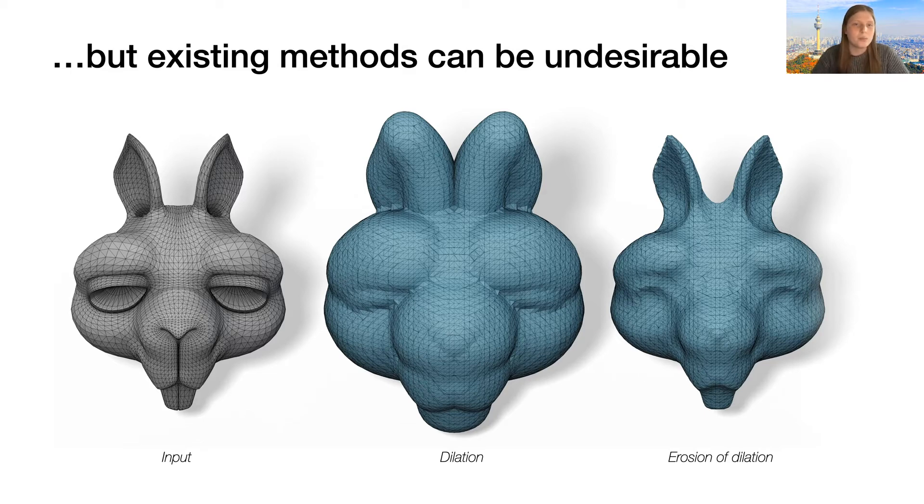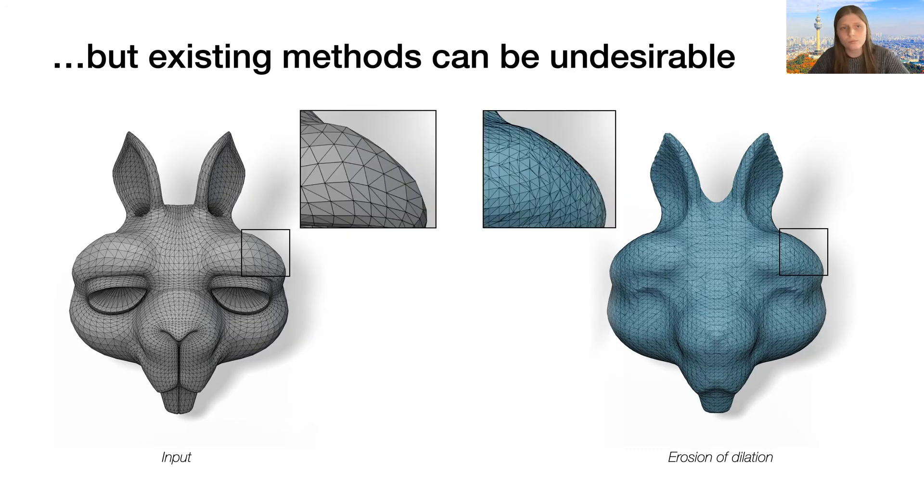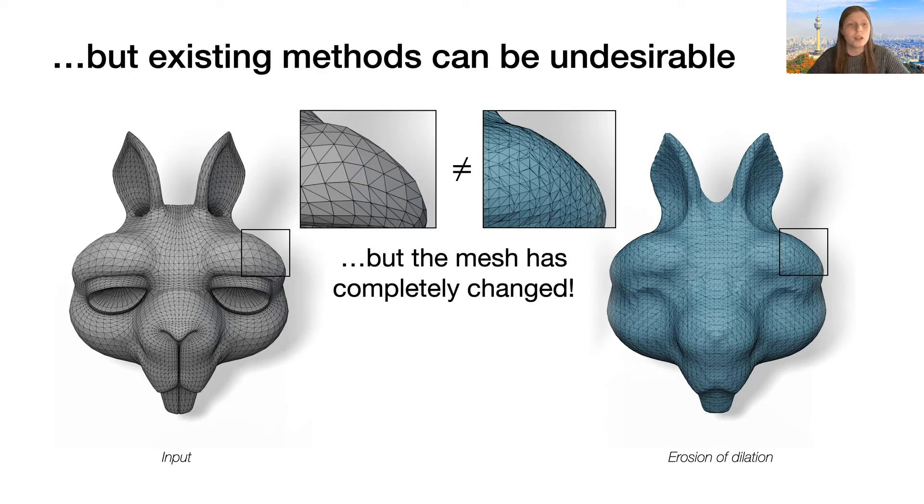However, currently existing methods for computing the closing of a surface can be undesirable. They are usually based upon the first definition we saw, and first compute a dilation of the shape in the middle here, and then compute an erosion of that dilation to get the final closing. Now if we look at the closing that they output, we can see that there are many regions of the shape where the geometry of the surface is the same, however the mesh has completely changed. This alone can make these methods completely unusable, because in many of the applications, the cost of losing our good, nice initial triangulation that perhaps an artist spent a week constructing is a price just too harsh to pay.